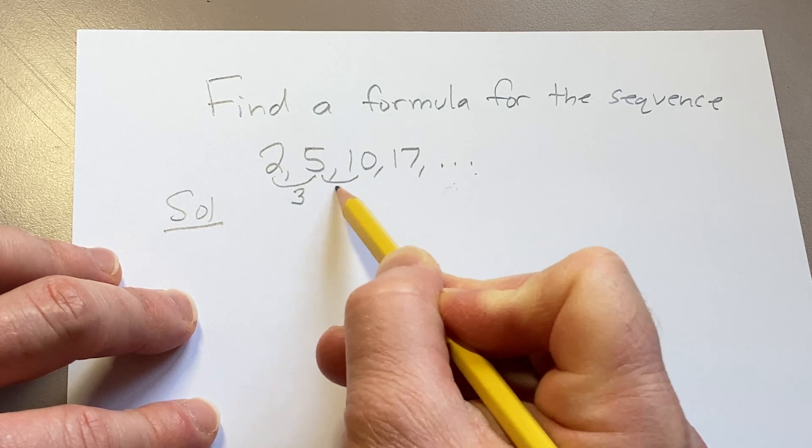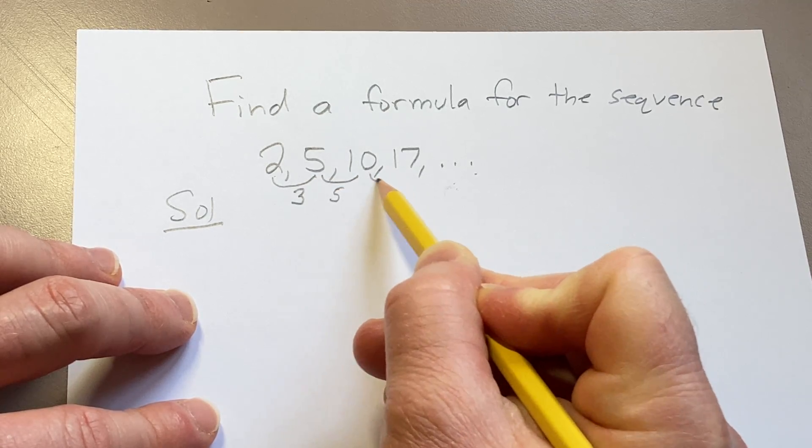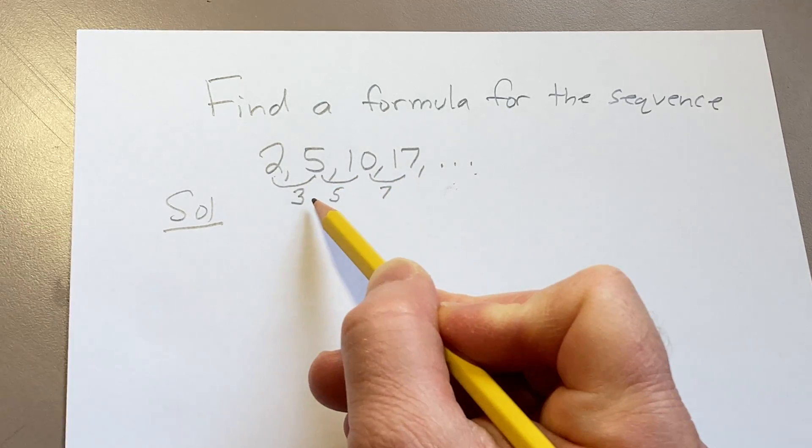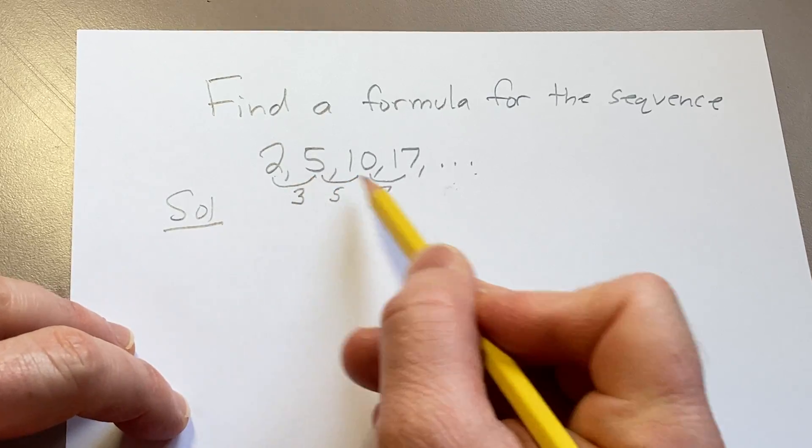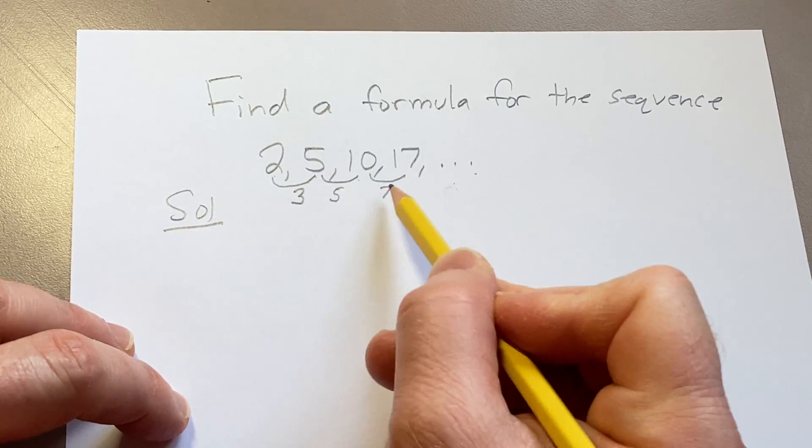Then to get from here to here you have to add 5, and then to get from here to here you have to add 7. So the distance is increasing between each term of the sequence. Here it's 3, here it's 5, here it's 7.